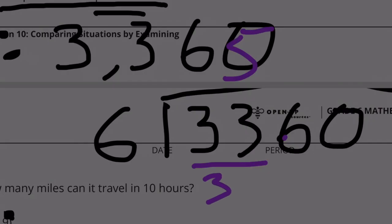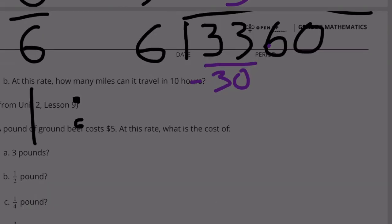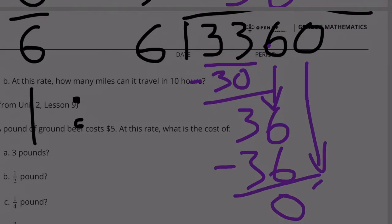5 times. 5 times 6 is 30. 33 minus 30 is 3. Bring down the 6. That's going to be 6. 6 times 6 is 36. Bring down the 0. How many times does 6 go into 0? 0 times.